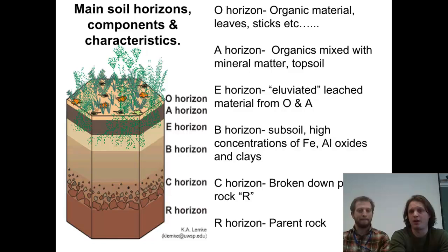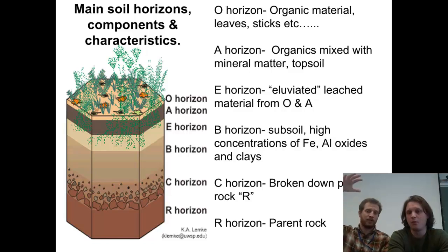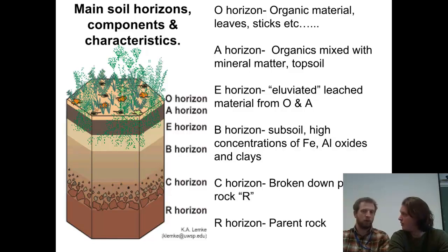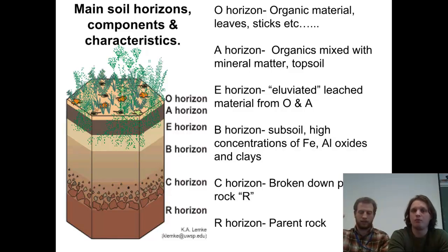Then we'll talk about the B horizon — the subsoil — which has high concentrations of iron and aluminum oxides and clays. That's just from those clays, because they're smaller — they fit between all the cracks or the sand particles and fall down through mole holes and worm holes. They just accumulate towards the bottom, and those iron and aluminum oxides accumulate just because they've leached from the top.